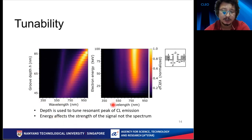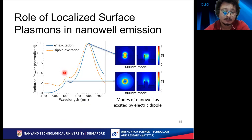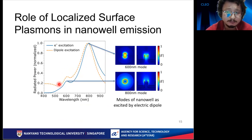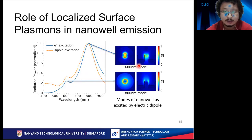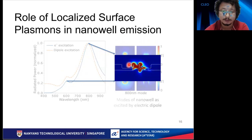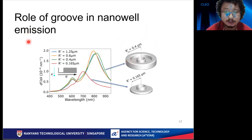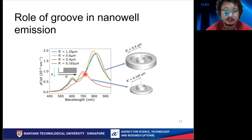Unlike Smith-Purcell radiation, the nanowell emission is mainly due to the modes of the structure, which is why you don't see large changes as the electron energy increases. We believe the resonant peaks seen on the spectrum are due to plasmonic modes. We verified this by doing electric dipole excitation, which matched the electron beam simulations; mode analysis revealed a zeroth mode at 800 nanometers and a dipole mode at 600 nanometers. The electric field is localized to the ridge, as seen previously in the movie. Not only the ridge matters — the groove is also important, as removing it blue-shifts the spectrum and significantly decreases the intensity.